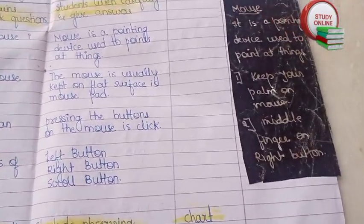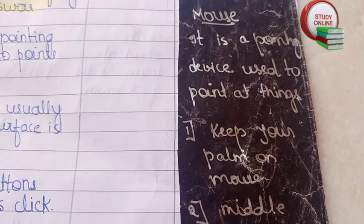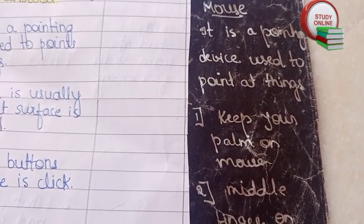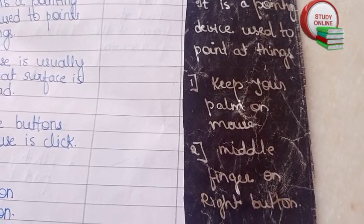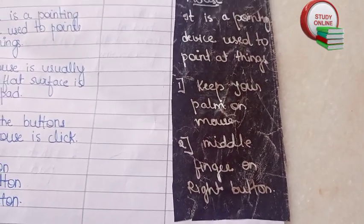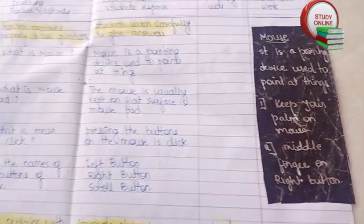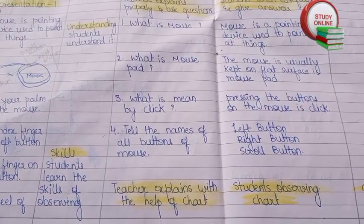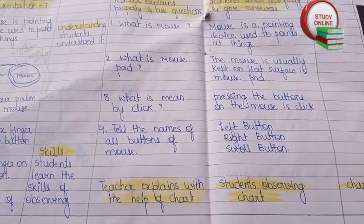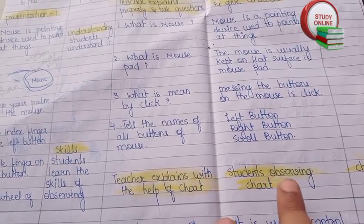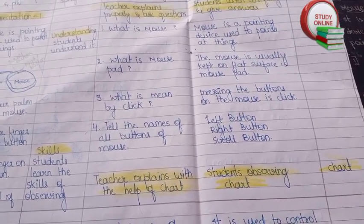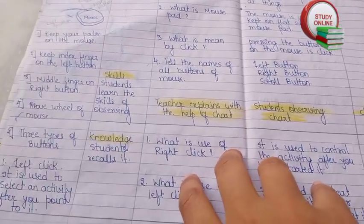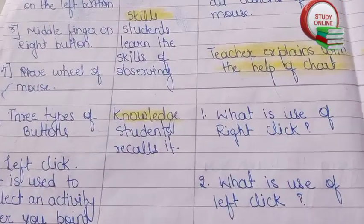Here you can see the blackboard work — we have to write all the points we want to teach to students and highlight them on the blackboard. After explaining everything, we also have to use some teaching aids. Here the teacher explains with the help of a chart and students observe the chart.